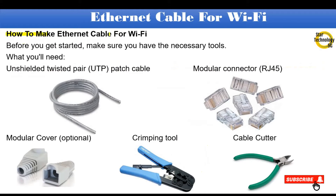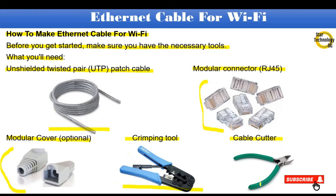How to make an Ethernet cable for a Wi-Fi router. Before you get started, make sure you have the necessary tools. You will need: unshielded twisted pair (UTP) patch cable, modular connector RJ45, modular cover (optional — the cable will work perfectly without a cover), a crimping tool, and a cable cutter.